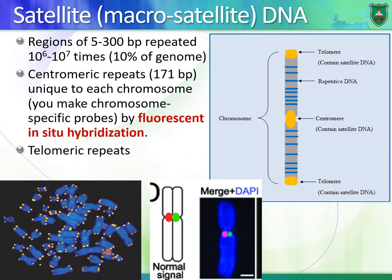Here are chromosomes with telomeres labeled — you can see they are located at the end of chromosomes. They are labeled by a technique known as fluorescent in-situ hybridization. In-situ means in place. It's known as FISH, and you will hear about this technique when you go to hospitals because it's widely used.